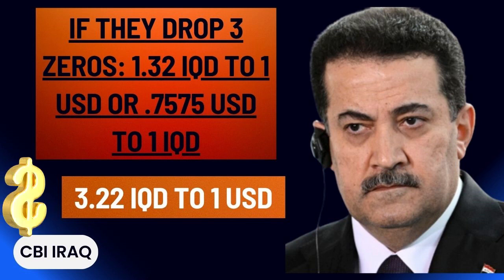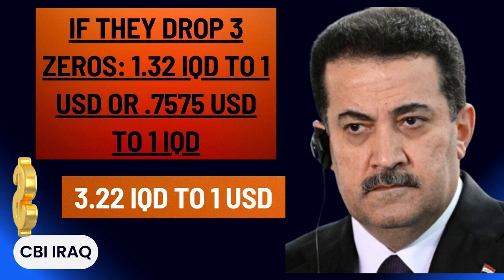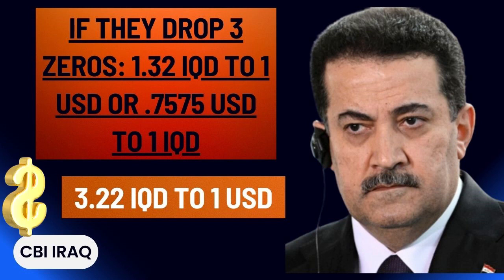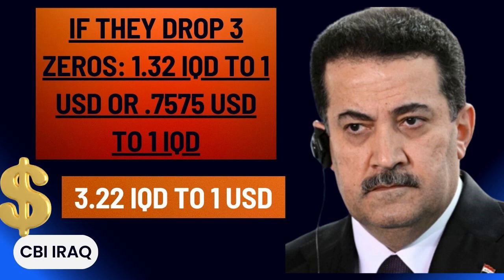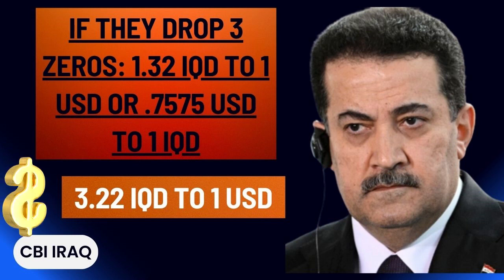Therefore, 1.32 IQD to one US dollar is 76 cents to each IQD. What we want to see posted on the CBI website — as to how many IQD are required to purchase one US dollar — is 1.00 or less. If they post 3.22 IQD to one US dollar, this would mean 31 cents per one IQD. We want them to post 0.31 IQD to one US dollar, which is then 3 US dollars and 22 cents to one IQD.